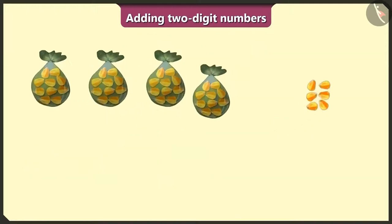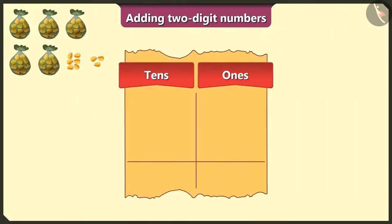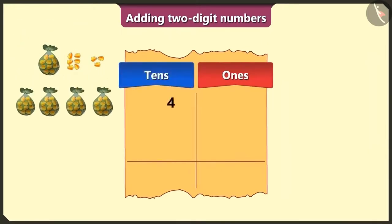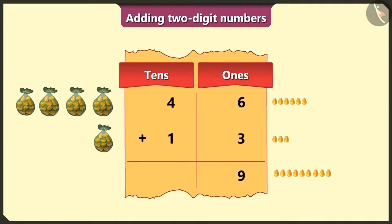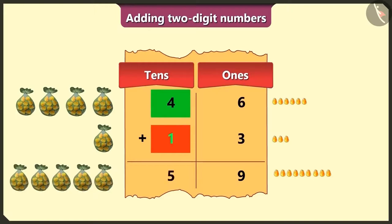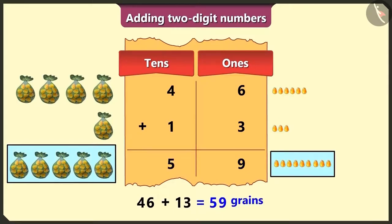Now adding 13 more to the 46 grains. For 46, write 4 in the tens box and 6 in the ones box. For 13, write 1 in the tens box and 3 in the ones box. First add the ones box: 6 and 3 make 9. Then the tens box: 4 and 1 make 5. Adding 4 tens and 6 ones to 1 ten and 3 ones gives a total of 59 grains.